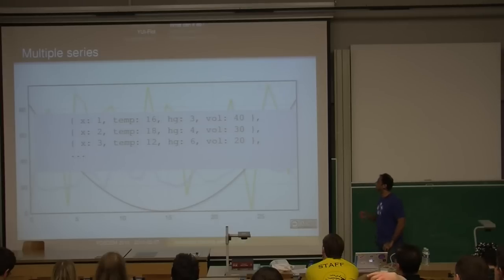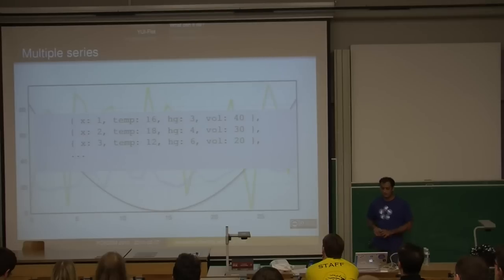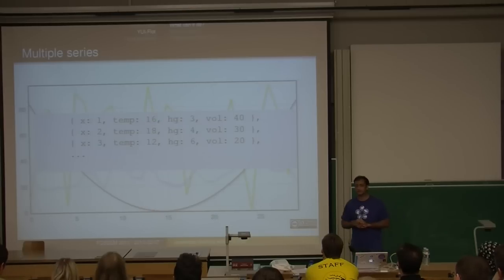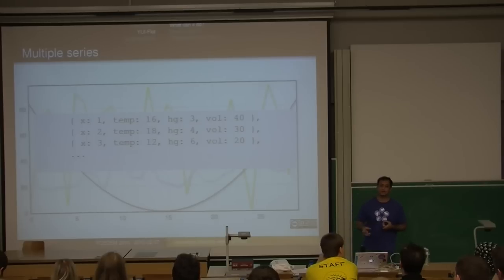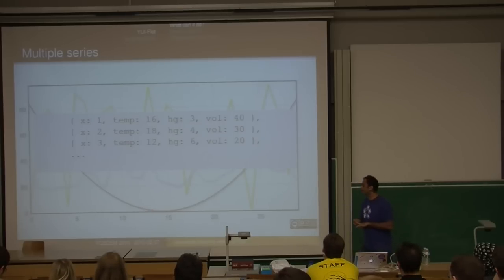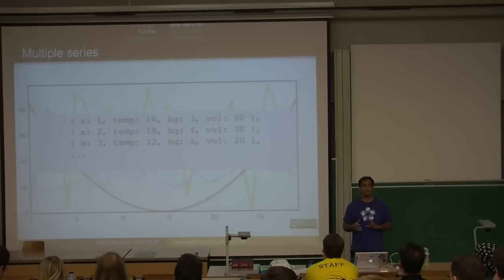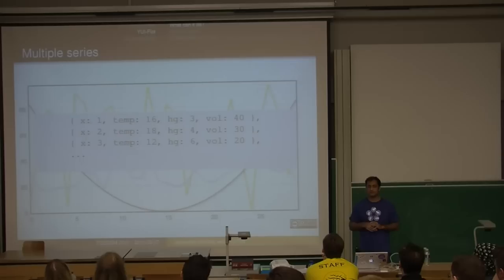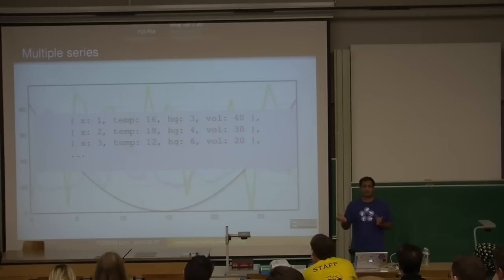So an example of what the data looks like: you have a common x and different y values. It does some intelligent things — if you just pass a data structure, it will try to figure out which is your x-axis and which is your y-axis. It looks for common field names like 'x', 'time', or 'date'. If it can't figure that out, it takes the first point as x-axis. Or you can specify it explicitly, and pass 20 dimensions but say only plot these four.